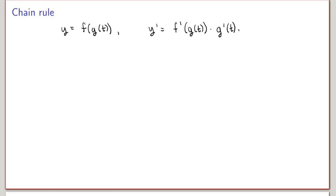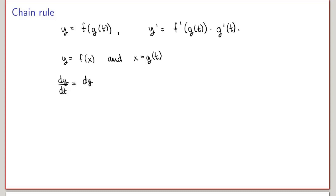For the purpose of generalizing to functions of several variables, it'll be useful to use Leibniz notation. So in this case we would say y is a function of x, and x is itself a function of t. Then we would write that the derivative of y with respect to t is equal to the derivative of y with respect to x times the derivative of x with respect to t.